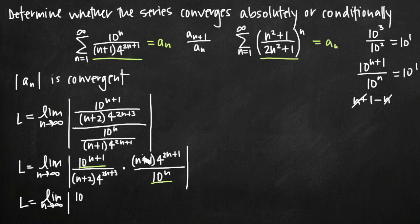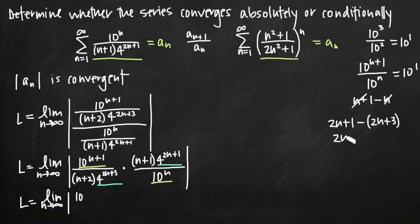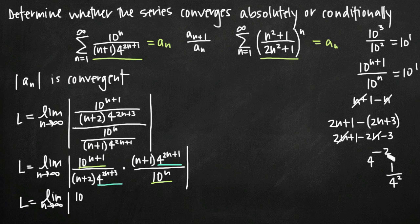Next, we match up 4 to the 2n plus 1 in the numerator and 4 to the 2n plus 3 in the denominator. Subtracting: 2n plus 1 minus 2n minus 3 gives negative 2. So we're left with 4 to the negative 2, or 1 over 4 squared, which moves to the denominator as 4 squared, or 16.